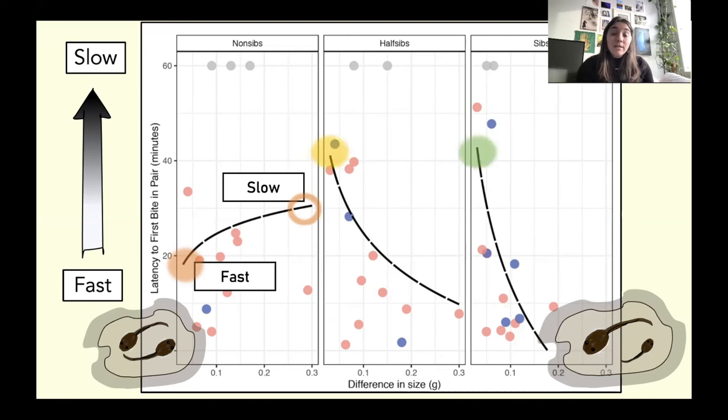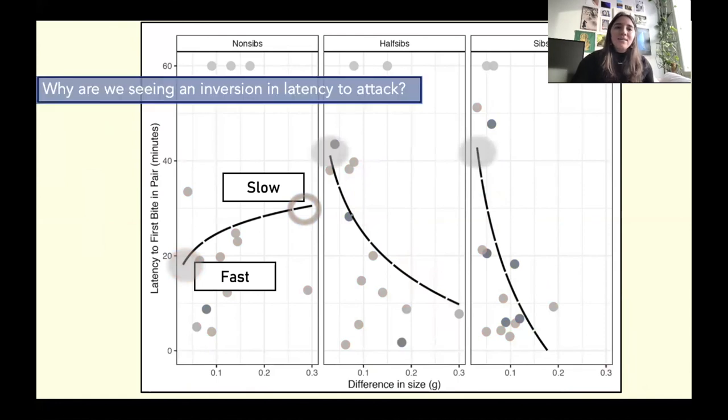What's really interesting is that this completely inverts for half siblings and full siblings. So when we look at similarly sized pairs, we see that the latency to aggression is very slow. So between similarly sized siblings, they're not attacking each other till, you know, 40-50 minutes into this hour-long trial. And this is versus pairs where we see a large size difference where we're seeing aggression between large siblings towards their smaller siblings happening within five minutes.